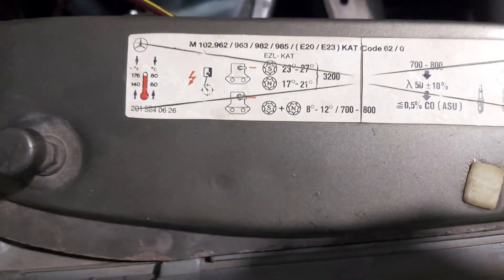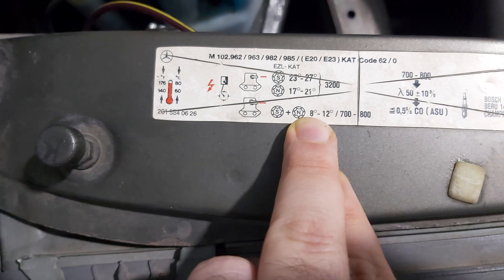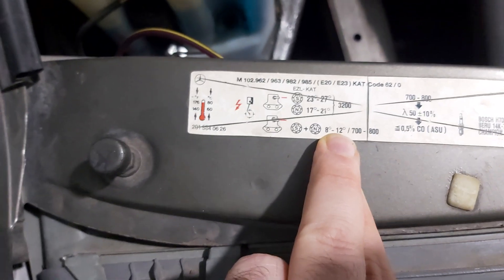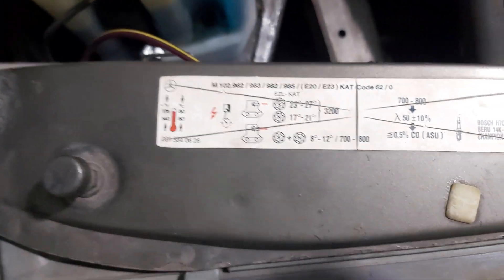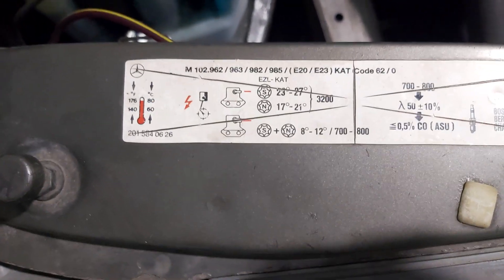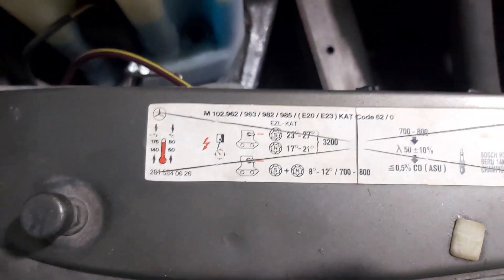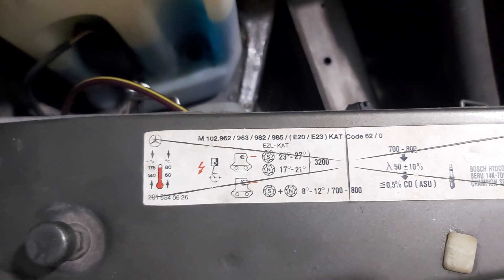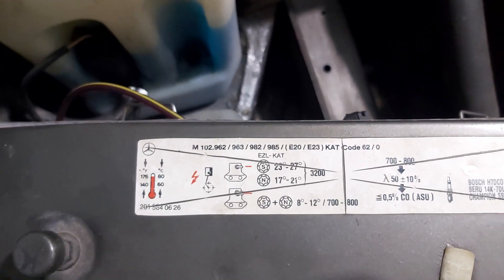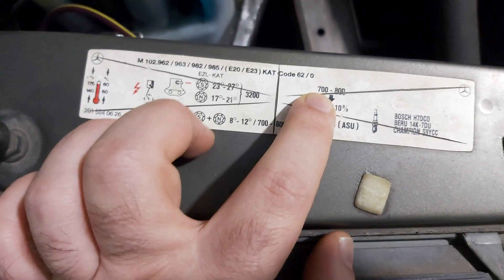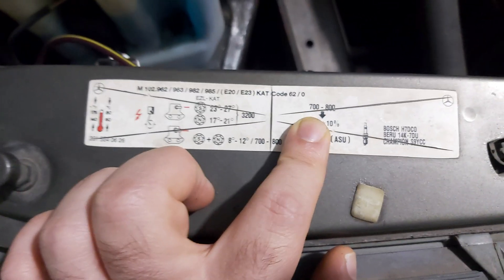Here's the dwell angle at idle, which is between 700 and 800. That dwell angle should be between 8 and 12 degrees. Now I doubt that you can adjust anything - you can just monitor that and you can do nothing.